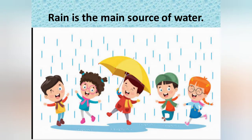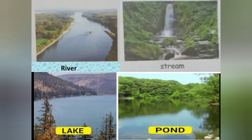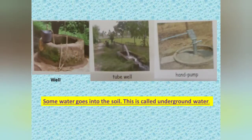Then what is the main source of water? Yes, rain is the main source of water. When it comes, it fills rivers, lakes, ponds and streams. But some water also goes into the soil. This is called underground water, and we use wells, tube wells and hand pumps to draw underground water. Up to here we already learned in the previous class.